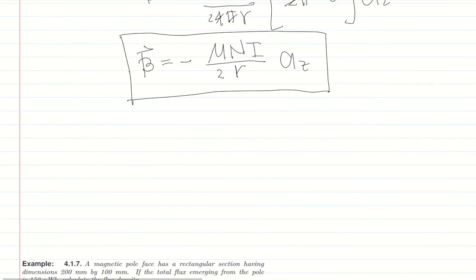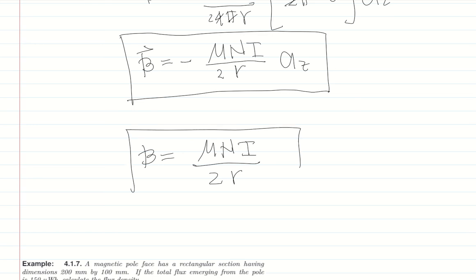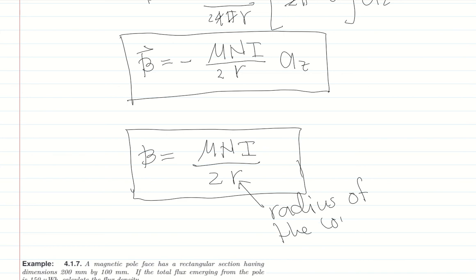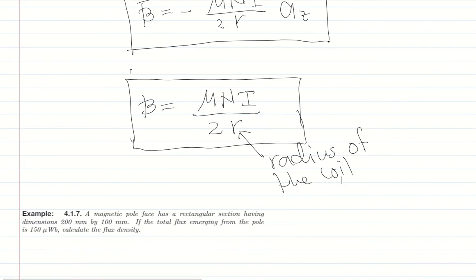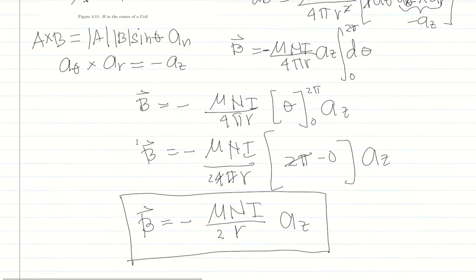The magnitude of the magnetic field density at the center of a coil is B = mu times N times I all over 2 times r, where r is the radius of the coil, N is the number of turns, I is the current in amps, and mu is the permeability. You can memorize this formula or re-derive it using Biot-Savart law.